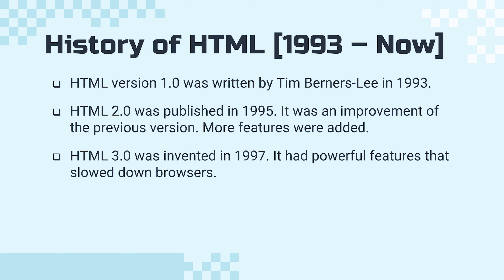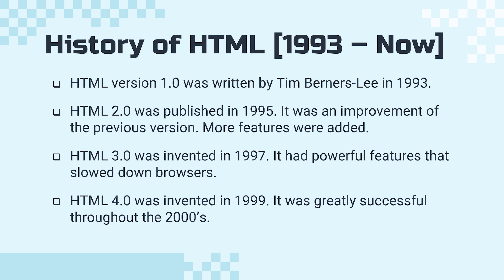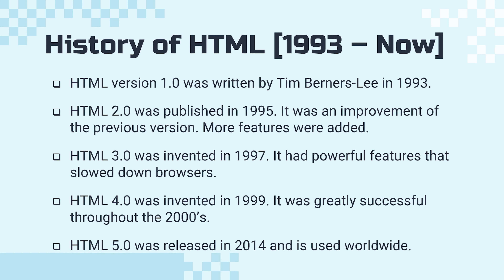HTML 3 was written in 1997. It had powerful features, but at the time it wasn't so efficient, so it slowed down the browsers. Version 4.0, which inherited version 3, was greatly successful because it was more efficient and was widely used throughout the 2000s. Now, the version that we're going to use in this course, which is version 5.0, was released in 2014, and it's currently used worldwide.